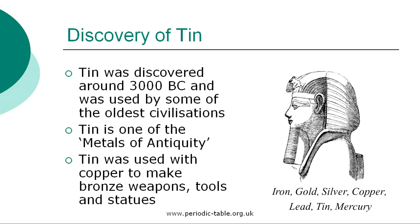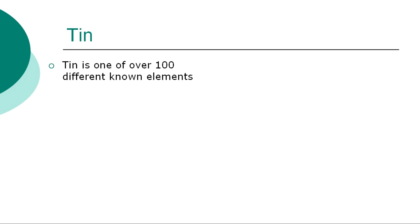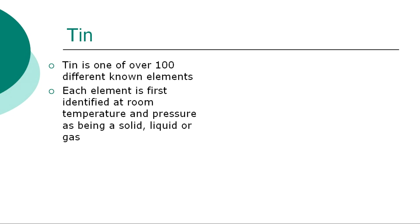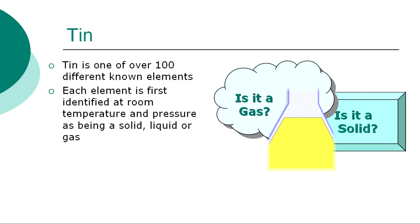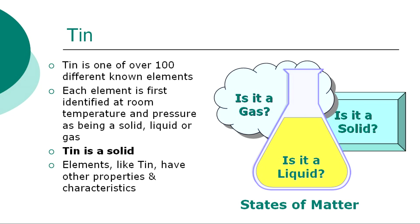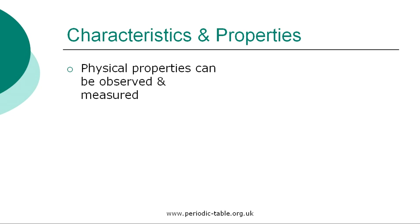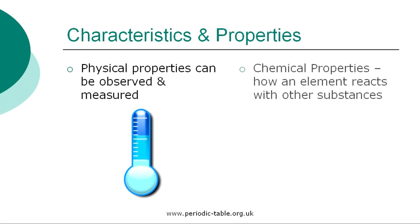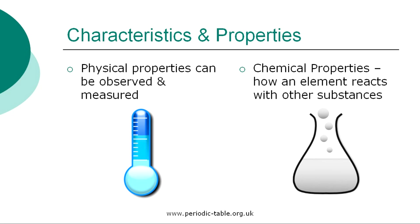Combined with copper to make bronze, the ancients used this material for making weapons, tools, and statues. The element tin is one of over 100 different chemical elements known to modern chemistry. Each element is first identified at room temperature and pressure as being a solid, liquid, or gas, referred to as states of matter. Tin is a solid at normal room temperature and pressure. Each element has physical properties that can be observed and measured, such as color, density, and odor. The chemical properties are the characteristics that determine how a substance will react with other substances, such as water or oxygen.